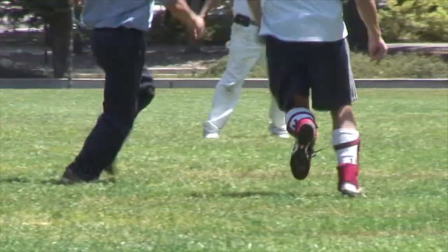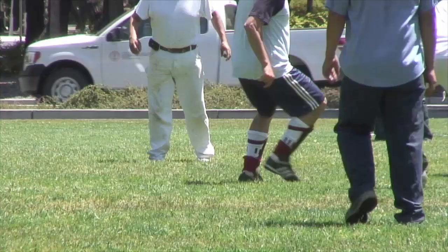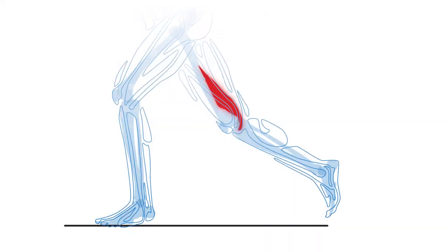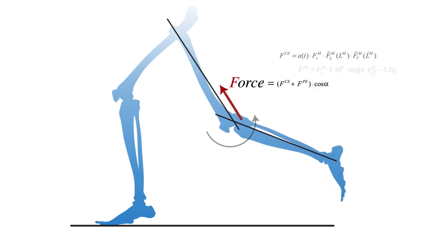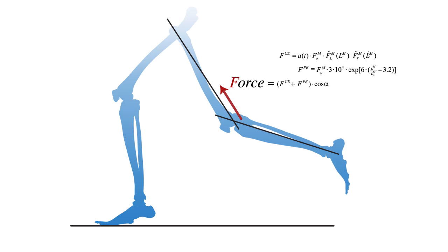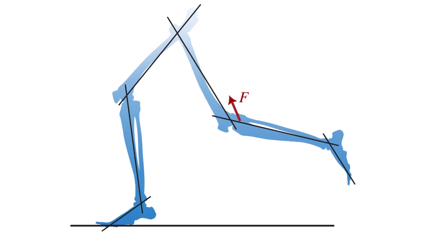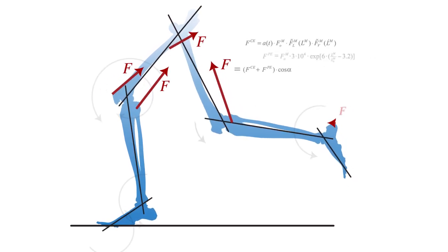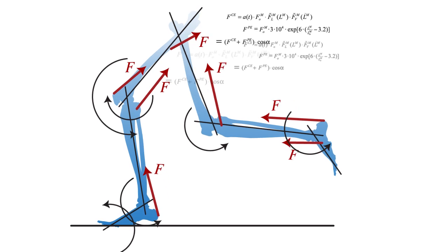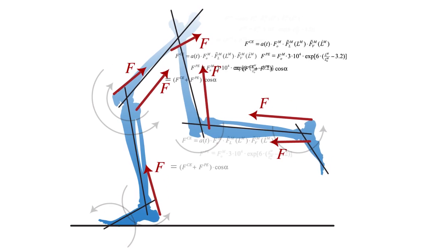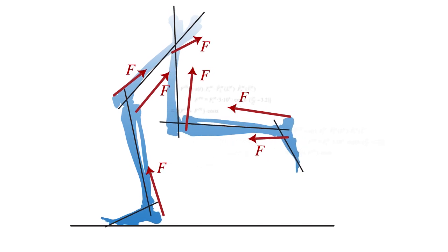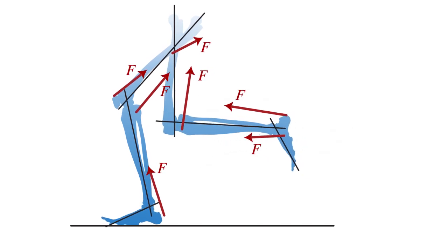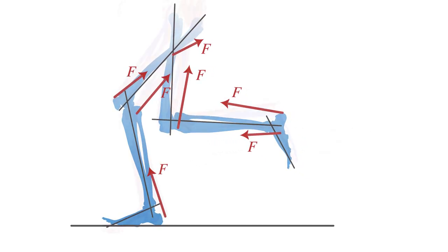For example, we can model running, which requires dozens of muscles in coordination. Each muscle in the body generates a force, pulling the bones it's connected to closer together. As they are activated, other muscles generate different forces. Using what we know about physics, anatomy, and physiology, we calculate all the different forces generated by all the different muscles as they are activated and deactivated at different times.